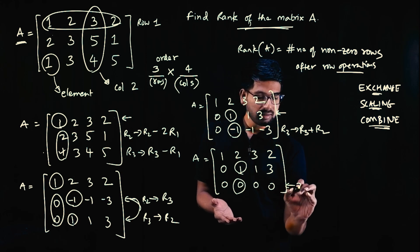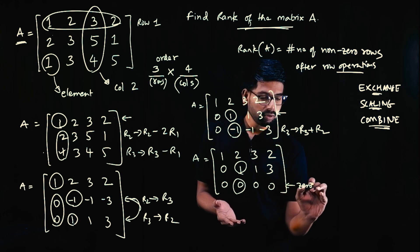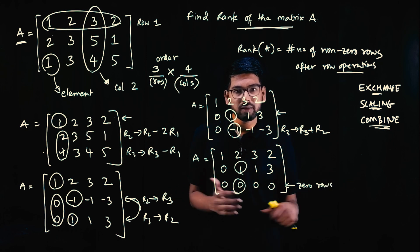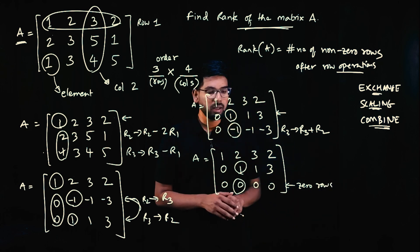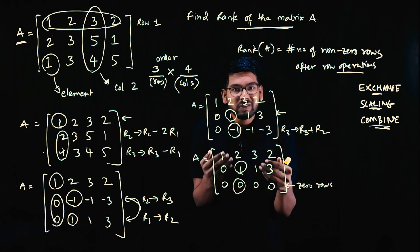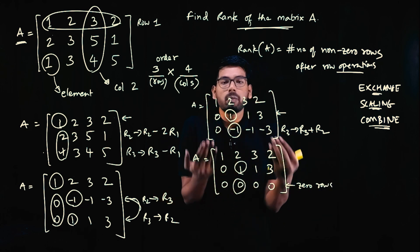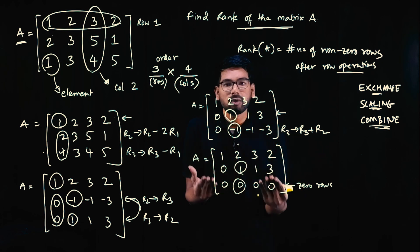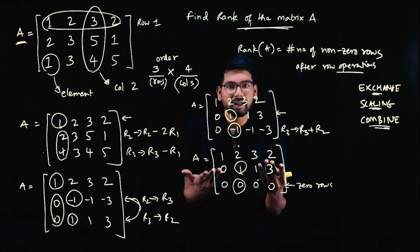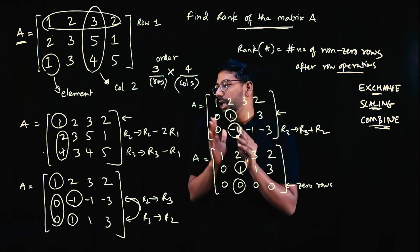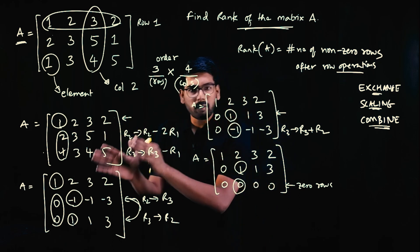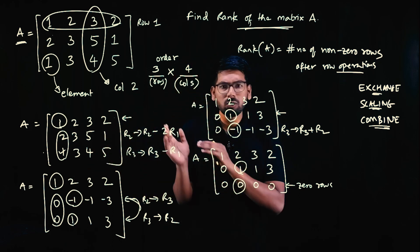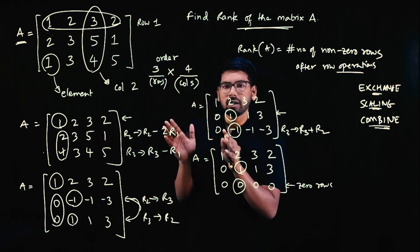This is a zero row — all elements in this row are zero. We cannot do any more row operations to make other rows zero. This is the end of the row operations.